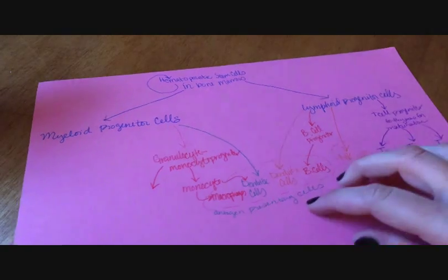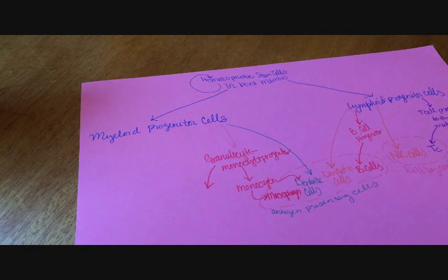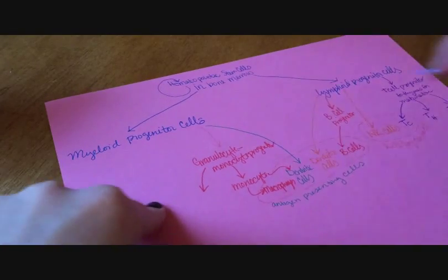Let's go to the cells that come from the myeloid progenitor side. But we still have to write down that neutrophils come from the granulocyte monocyte progenitor.